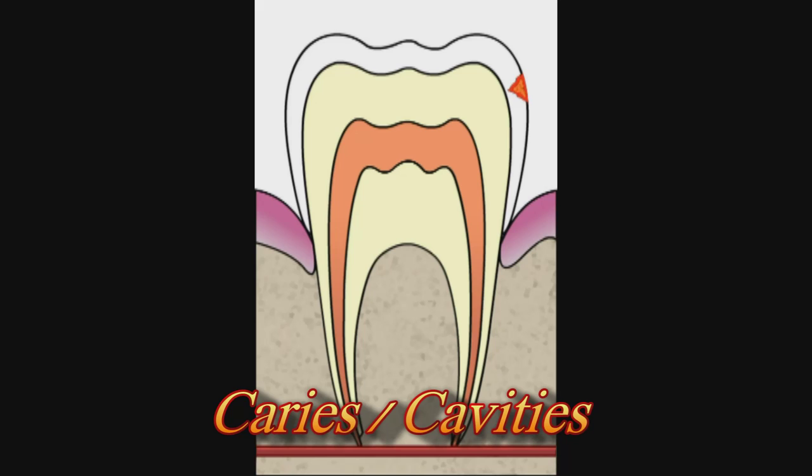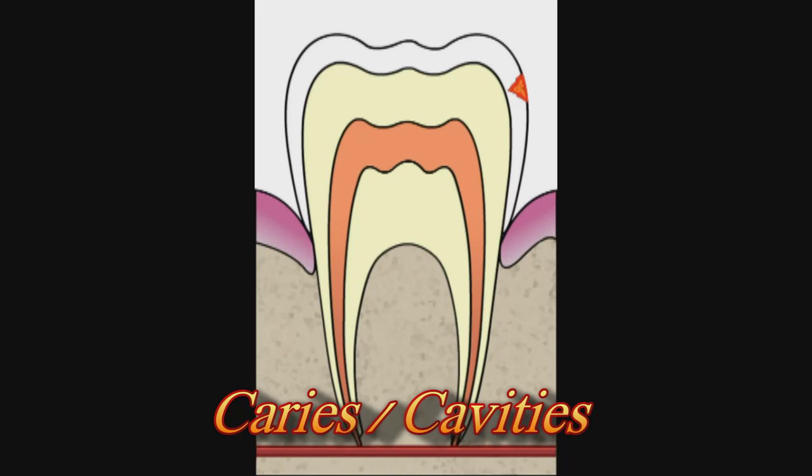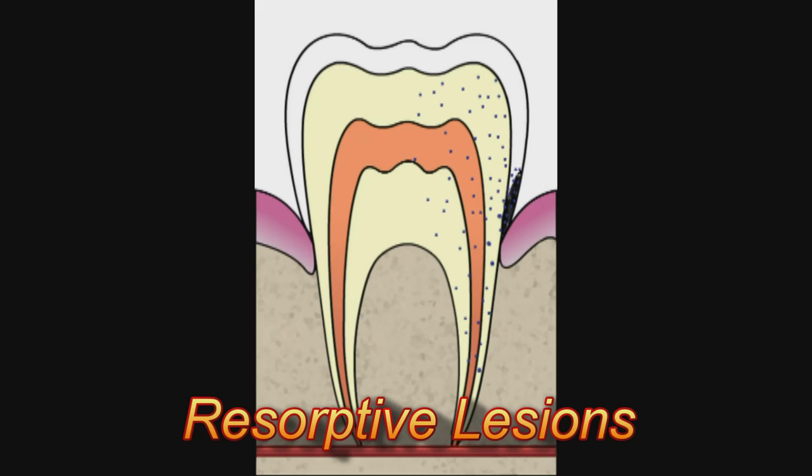Whereas a caries is due to bacteria eating away at the tooth, resorptive lesions are due to tooth cells called odontoclasts eating away at the tooth. With caries, the treatment is to drill away the infected area and fill in the hole. But if we drill resorptive lesions and fill those, the odontoclasts still eat away. So the only treatment is to extract the tooth.